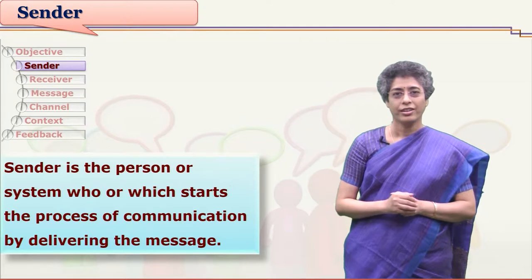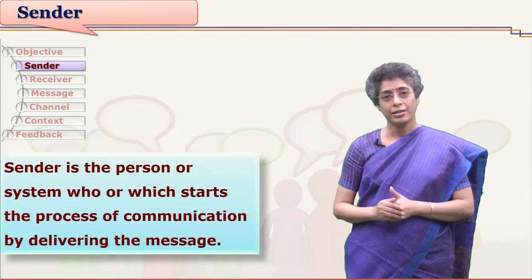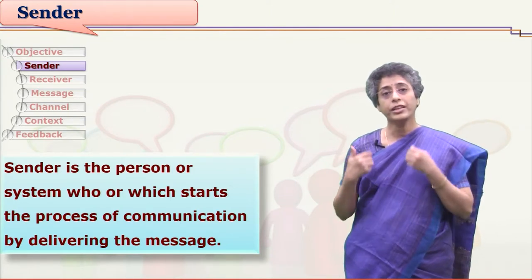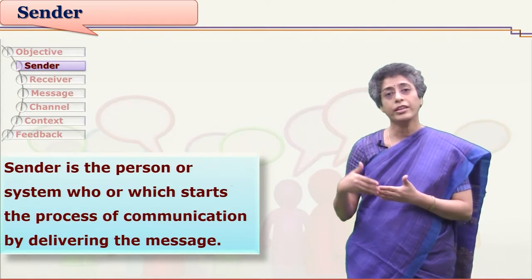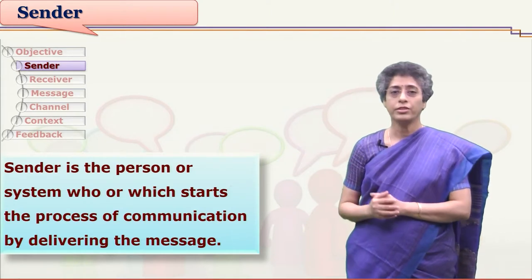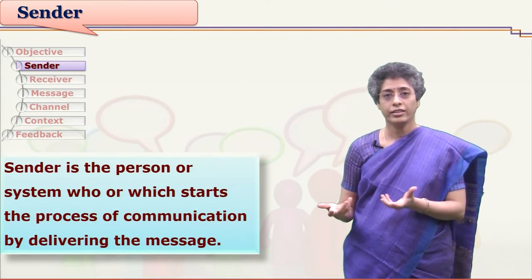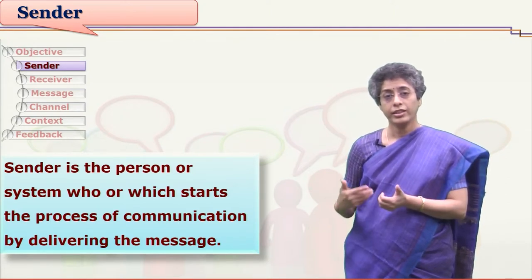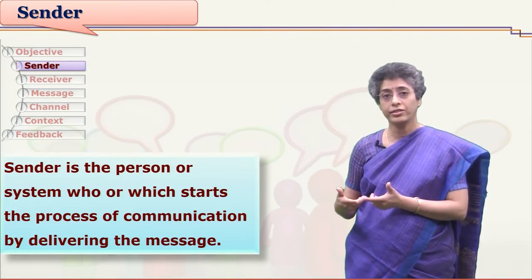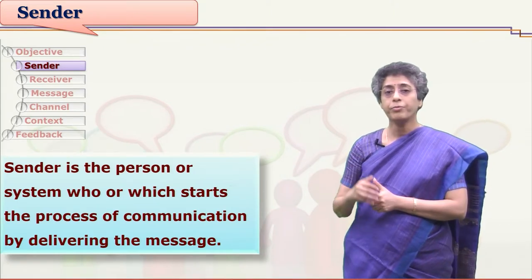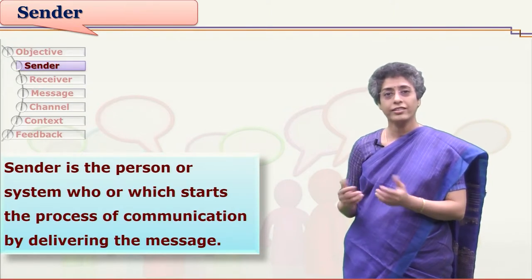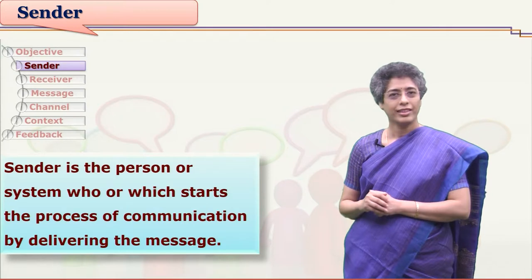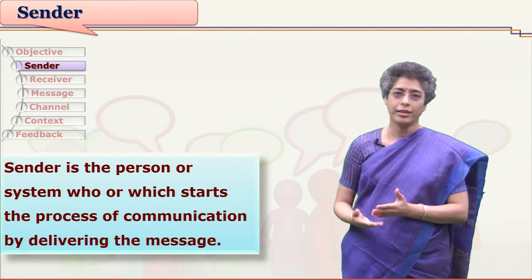You might be wondering why sender is a person or a system. Many times human beings themselves start communicating, but where there is a situation where a human being cannot impart information or start communication, they use some different channel or system device to communicate with others. For example, if we are getting automated messages, the system delivering those automated messages becomes the sender. If we put an alarm on our cell phone, the cell phone wakes us up — it is sending us the message to wake up. So we can say that a sender need not always be a person; it can be a system also.